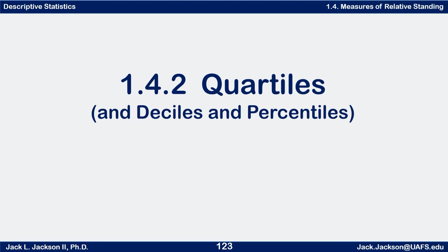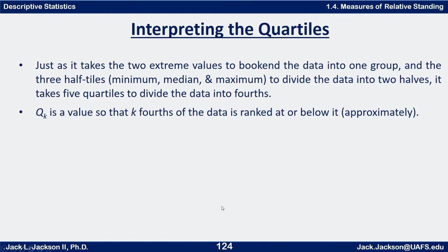In this video we're going to be looking at quartiles and briefly at deciles and percentiles. It takes two extreme values to book in the data into one single group — the minimum and maximum — and all the data is at or between those. It takes three half-tiles — the minimum, the median, and the maximum — to divide the data into two halves, so half the data is from the minimum to the median and half is from the median to the maximum.